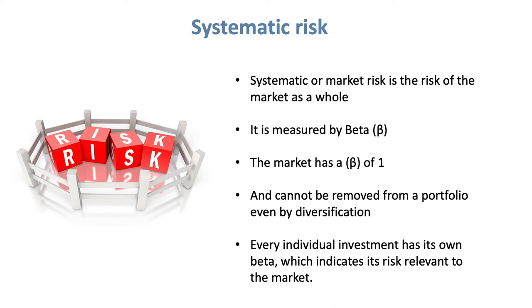Having explored standard deviation and its use through the efficient frontier, we now turn to an alternative measure of risk — beta — a measure of market risk as a whole. We'll explore systematic risk in more detail in chapter five, but for now we accept that the market as a whole is measured by beta. Systematic market risk is measured by beta.